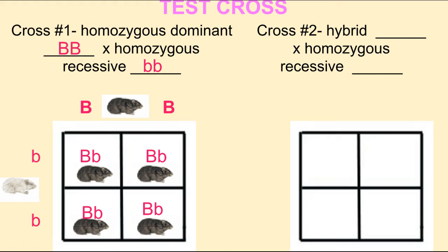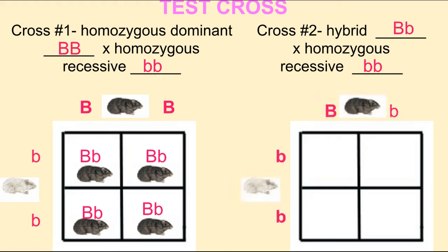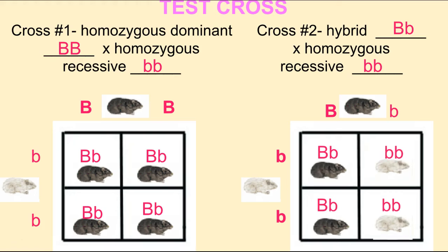Cross two: take the heterozygous possibility of the guinea pig and cross it with the homozygous recessive white guinea pig again. You're always crossing with the homozygous recessive. In this case, there's a 50% chance that the offspring would be black and a 50% chance that the offspring would be white.